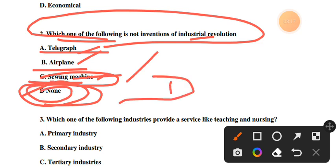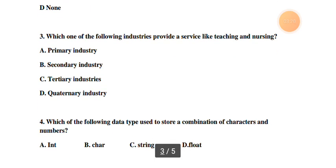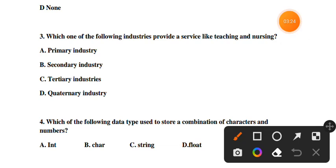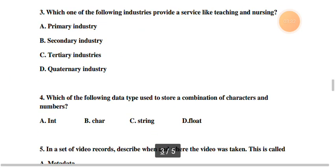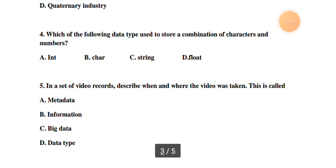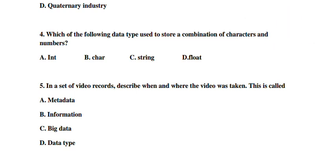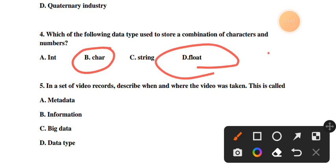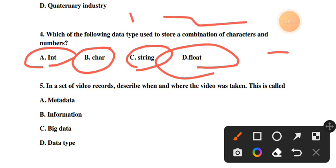Number three: Which of the following industries provide service like teaching and nursing? The answer is tertiary industries. Number four: Which of the following data type is used to store a combination of characteristics and numbers? The options are: float, string, integer. The answer is string - it can store both characters and numbers together.